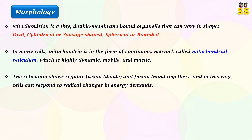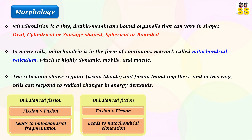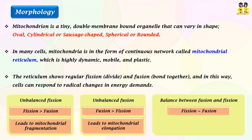These processes allow cells to deal with radical changes in energy demands. In case of unbalanced fission — that is when fission exceeds fusion — it leads to mitochondrial fragmentation. Unbalanced fusion — when fusion exceeds fission — leads to mitochondrial elongation. If there is a balance between mitochondrial fusion and fission, that is fission equals fusion, mitochondria form a branched tubular network.